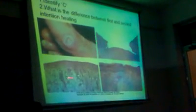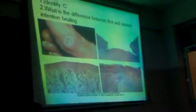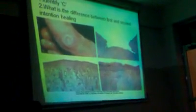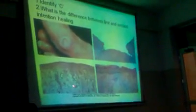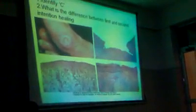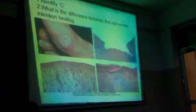This is an ulcer, and what you see here is the base of it, and this is the healing. The healing shows granulation tissue. Granulation tissue is composed of capillaries, connective tissue, inflammatory cells, and fibroblasts. Here the healing has occurred — the union has occurred.